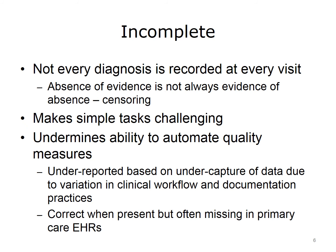Data may also be incomplete. For example, not every diagnosis is recorded at every visit. In other words, the absence of evidence is not always evidence of absence. This is an example of a concern known by statisticians as censoring. Incomplete data makes tasks that are seemingly simple quite challenging, such as the identification of diabetic patients. It also undermines the ability to automate quality measurement. One study found that quality measures were underreported based on undercapture of data due to variation in clinical workflow and documentation practices. Another study found that quality measures are usually correct when present, but they're often missing in primary care electronic health records.